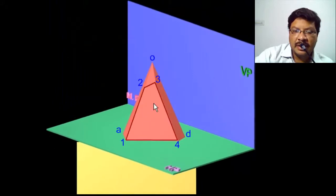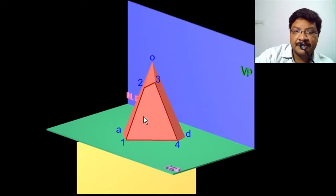Now I am getting the true shape of the section when I am seeing perpendicular to this section. That means while drawing, you have to consider an auxiliary plane to get the true shape.